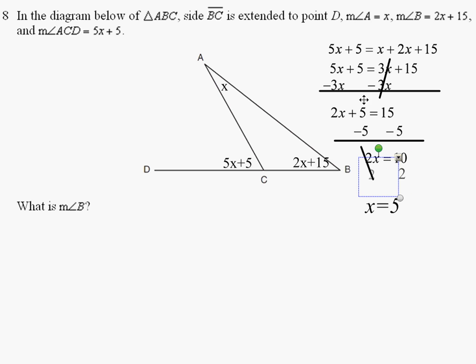Forgot to cancel out the 5s here. Subtracting 5 from both sides, then dividing by 2, we get x equals 5.